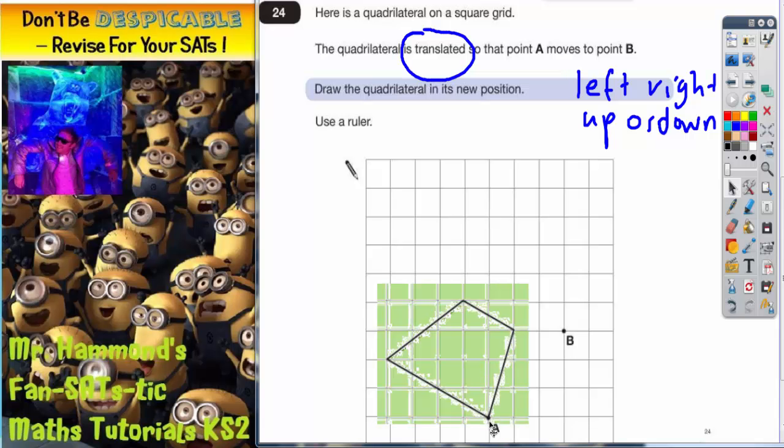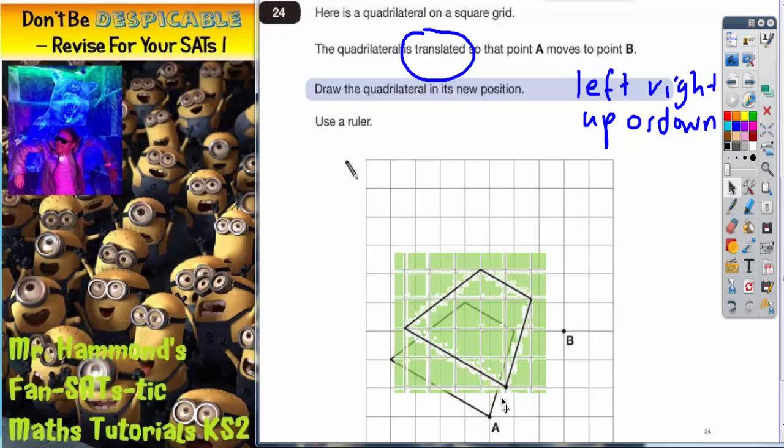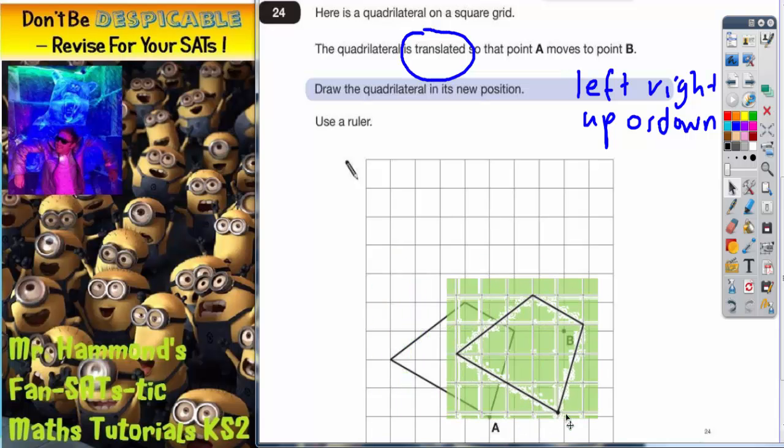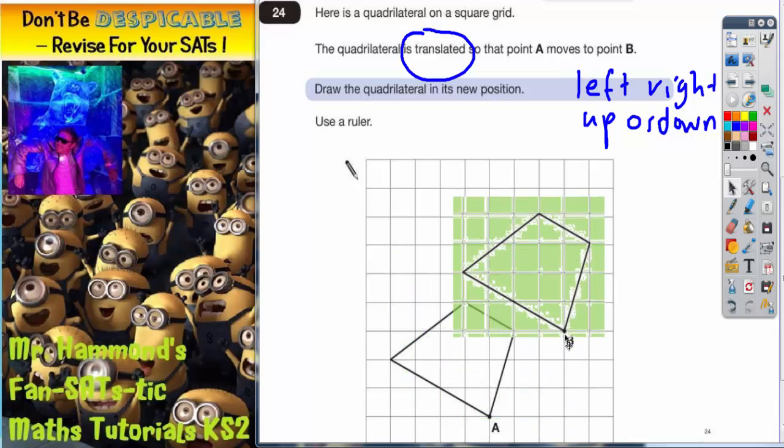making sure you know which point is point A, slide your tracing paper along and up to fit point A over point B. And it would be there. So all you would have to do then is draw the lines onto the square grid. Obviously, you would use a ruler. That's one method you can use using tracing paper.